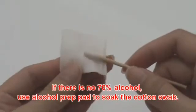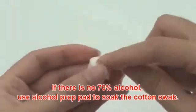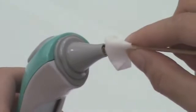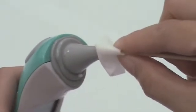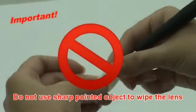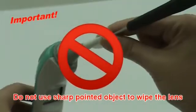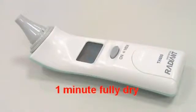If there is no 70% alcohol, use an alcohol prep pad to soak the cotton swab. Do not use a sharp pointed object to wipe the lens. Allow the probe to fully dry for at least one minute.